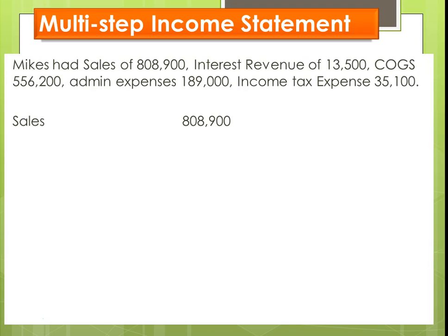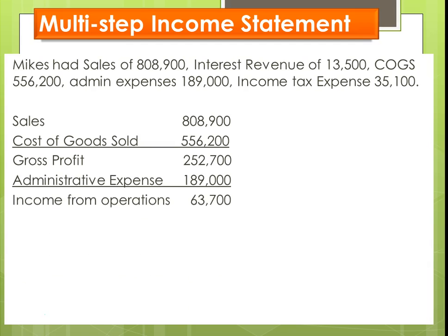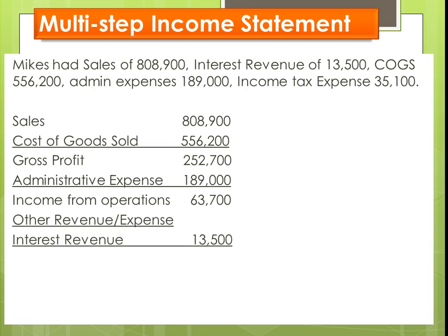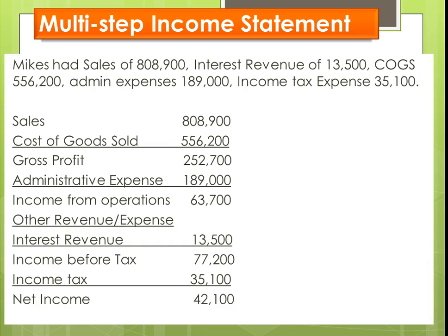We'll take Sales. We have no Sales Returns and Allowances or Sales Discounts, so that is our net sales. We subtract Cost of Goods Sold. We don't have any selling expenses, so all we have are administrative expenses, giving us income from operations. Then we add in our interest revenue to get income before tax, subtract our income tax, and now we have net income, which rolls into the Statement of Retained Earnings.